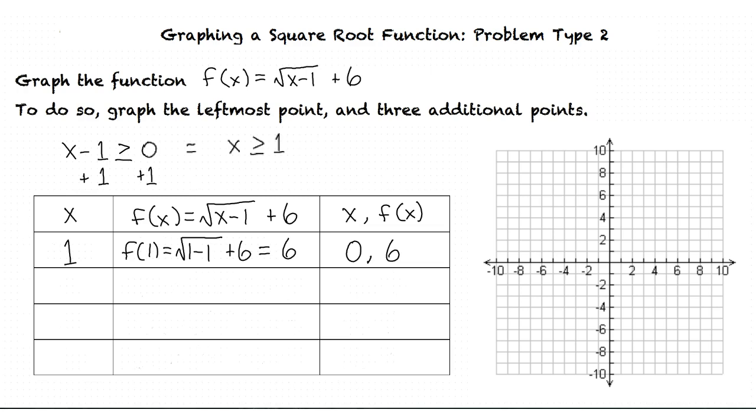Oh, so it would be better if we chose an x value like 2, because 2 minus 1 would be 1, and the square root of 1 is 1, and then 1 plus 6 is 7. Like that? Exactly. Now we can put our second point in our table.